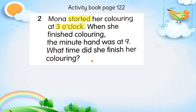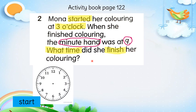So look at the keywords: started at 3 o'clock, mula pukul 3. Selepas habis warna, minute hand menunjukkan 9. So I will draw the clock face first — saya akan lukiskan muka jam. Start pukul 3 — 3 o'clock. The minute hand, the long hand, is at 12, and then the short hand, hour hand, is at 3. Jarum panjang di 12, jarum pendek di nombor 3. This is 3 o'clock.